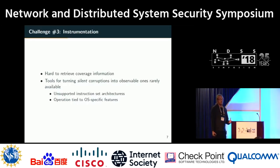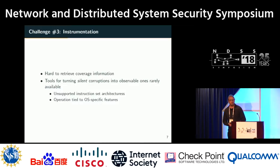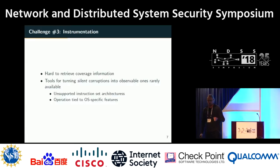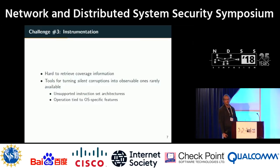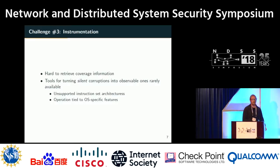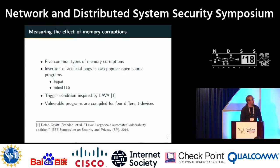The third challenge is instrumentation capability. A lot of fuzzing work relies on coverage information — AFL being a well-known example — but for embedded devices we cannot easily retrieve this information. Likewise, tooling used on desktop software to turn silent memory corruptions into observable ones, such as AddressSanitizer, may not be available for embedded devices because the instruction set is not supported or the tool depends on OS-specific features.